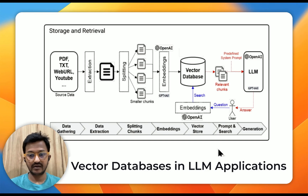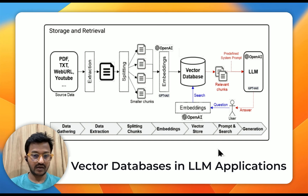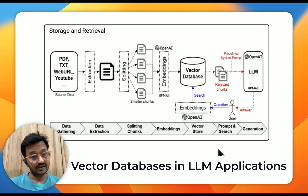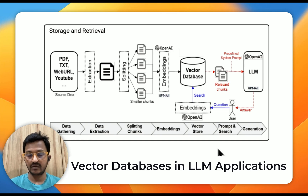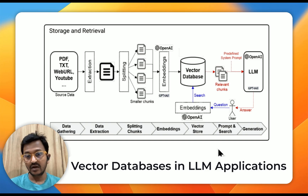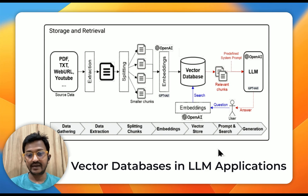Let's see where vector embeddings play their part in an LLM application. Like we discussed, data from various sources — PDF, text, URLs, YouTube, audio, video from the internet — gets extracted and split into smaller or bigger chunks depending on the use case. All these chunks go through an embedding model from platforms like OpenAI, Cohere, or HuggingFace. In the image, you see OpenAI's embedding model. All these chunks go through the embedding model and that's how vector embeddings are created, then stored in a vector database.